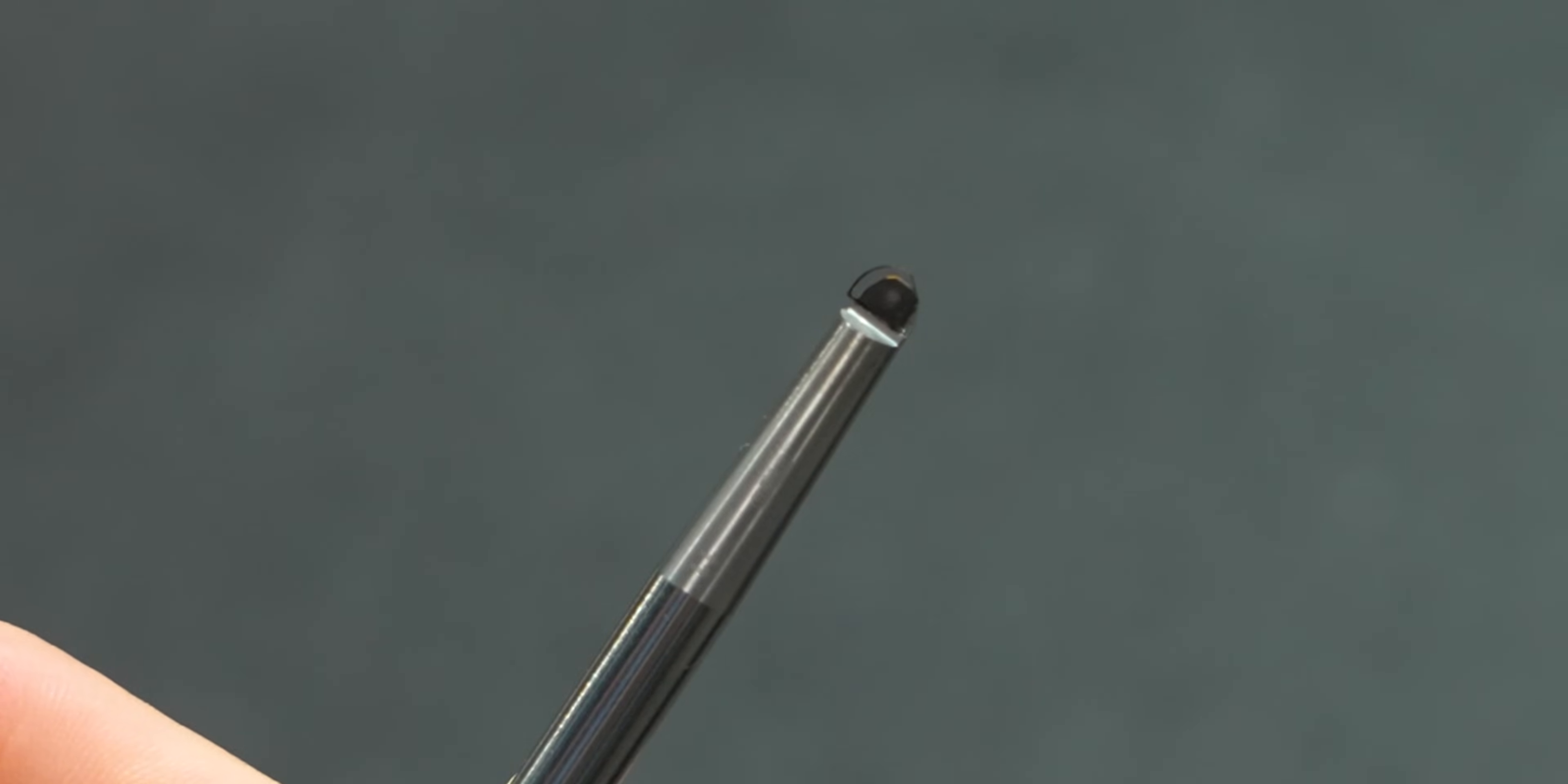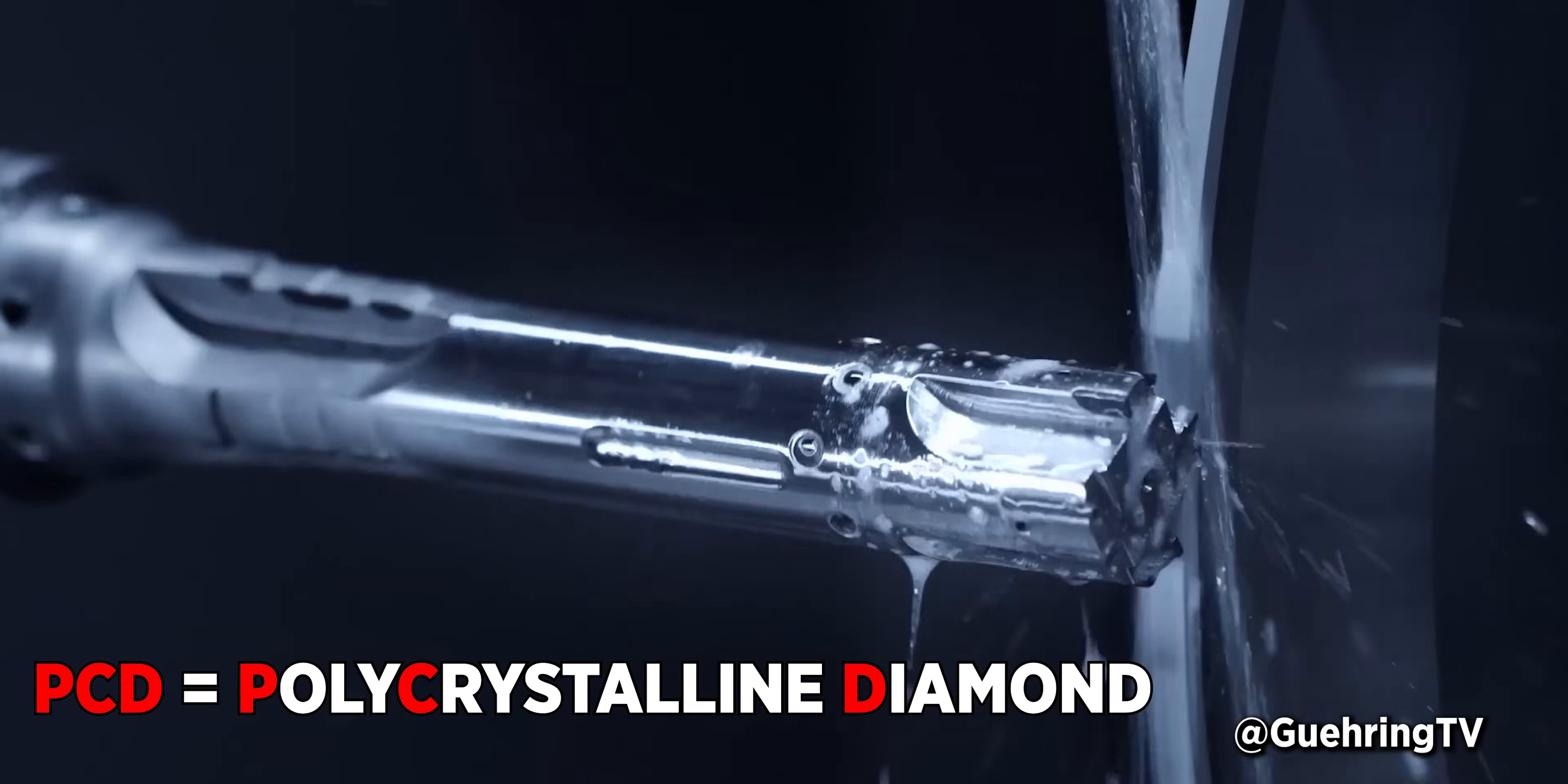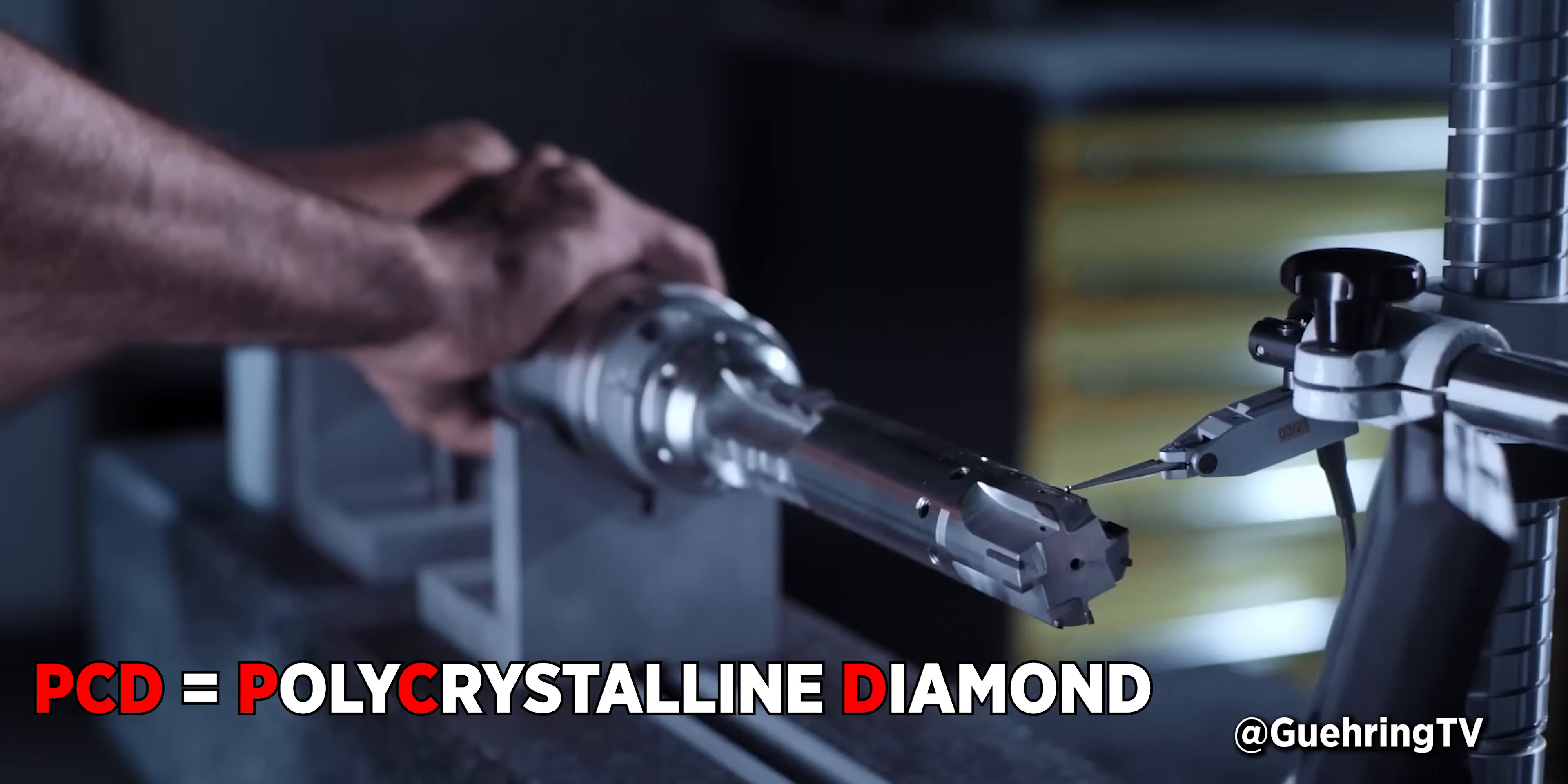You guys might be familiar with PCD, but the difference is MCD is formed by a single crystal structure, whereas PCD is formed by multiple smaller crystals and then held together with a binder.